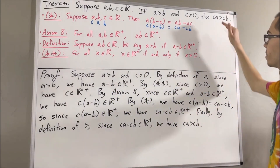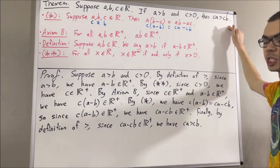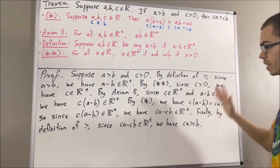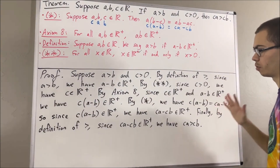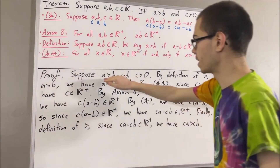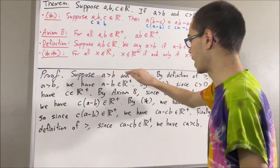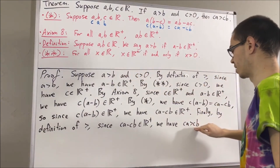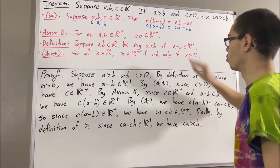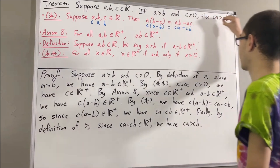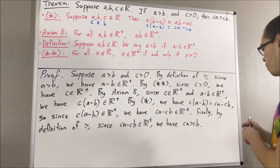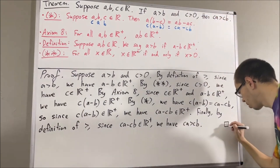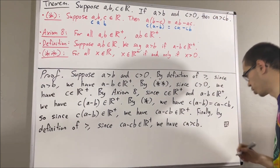And that is exactly what we wanted to show. So, we have if A is greater than B and C is greater than 0, then CA is greater than CB. We have proven exactly what we wanted to prove. So this completes the proof.